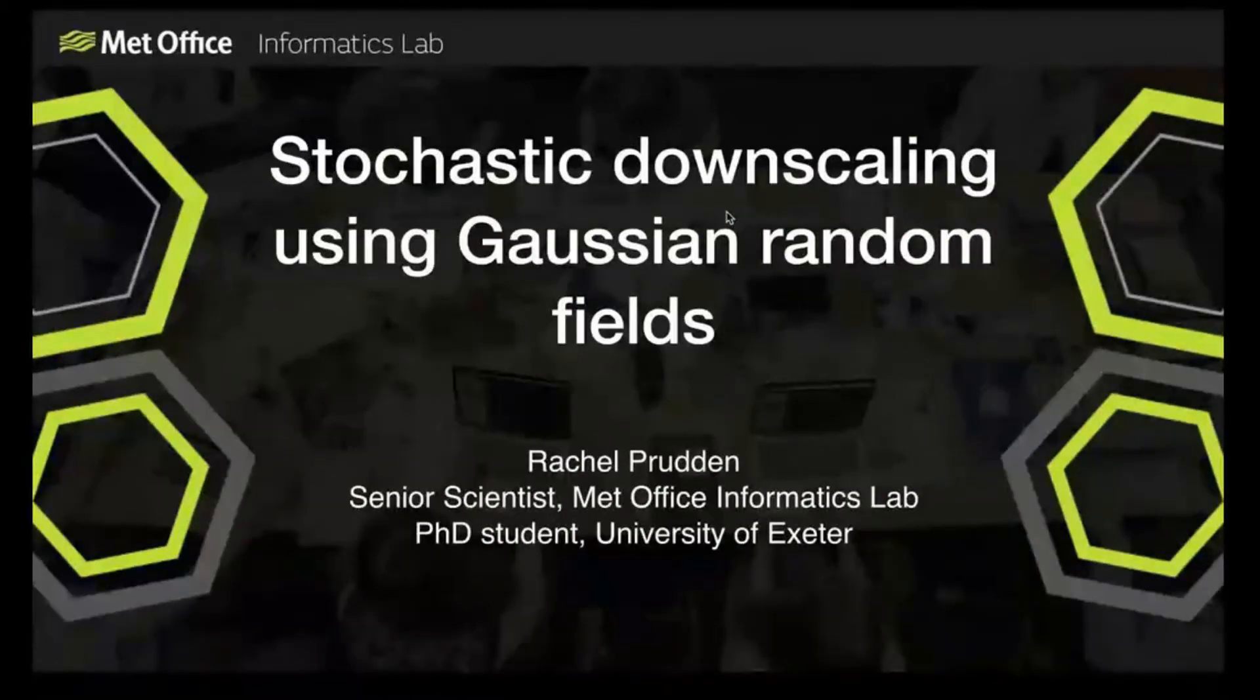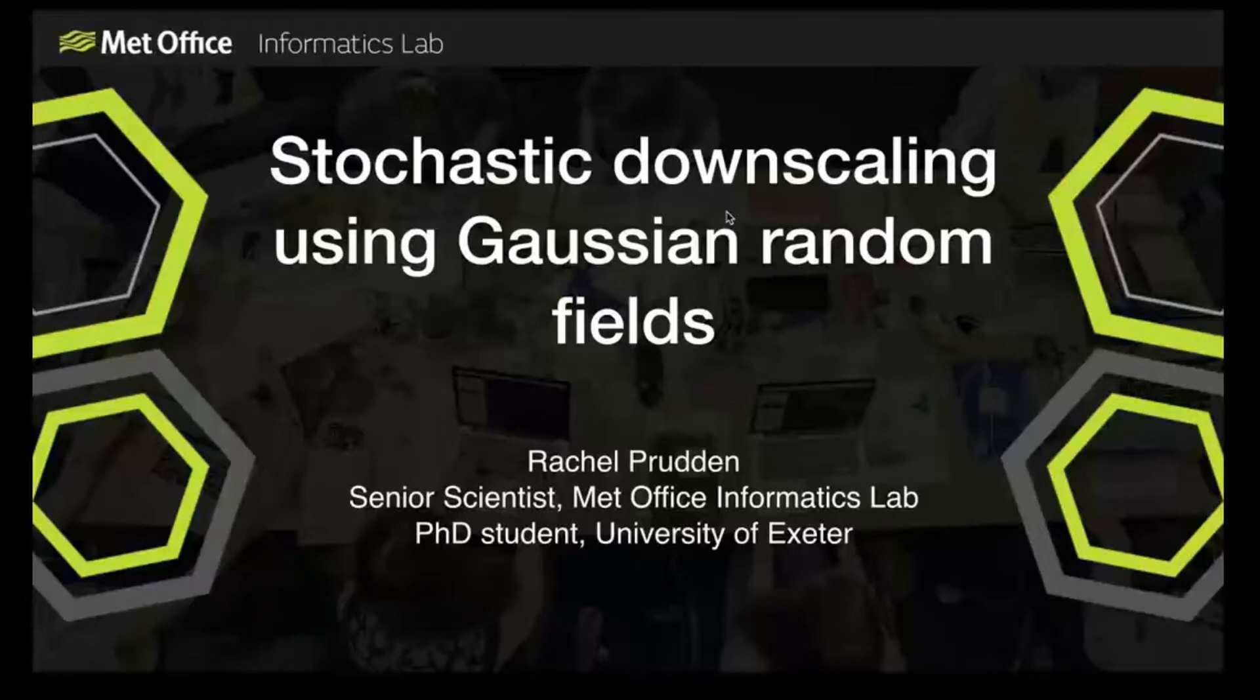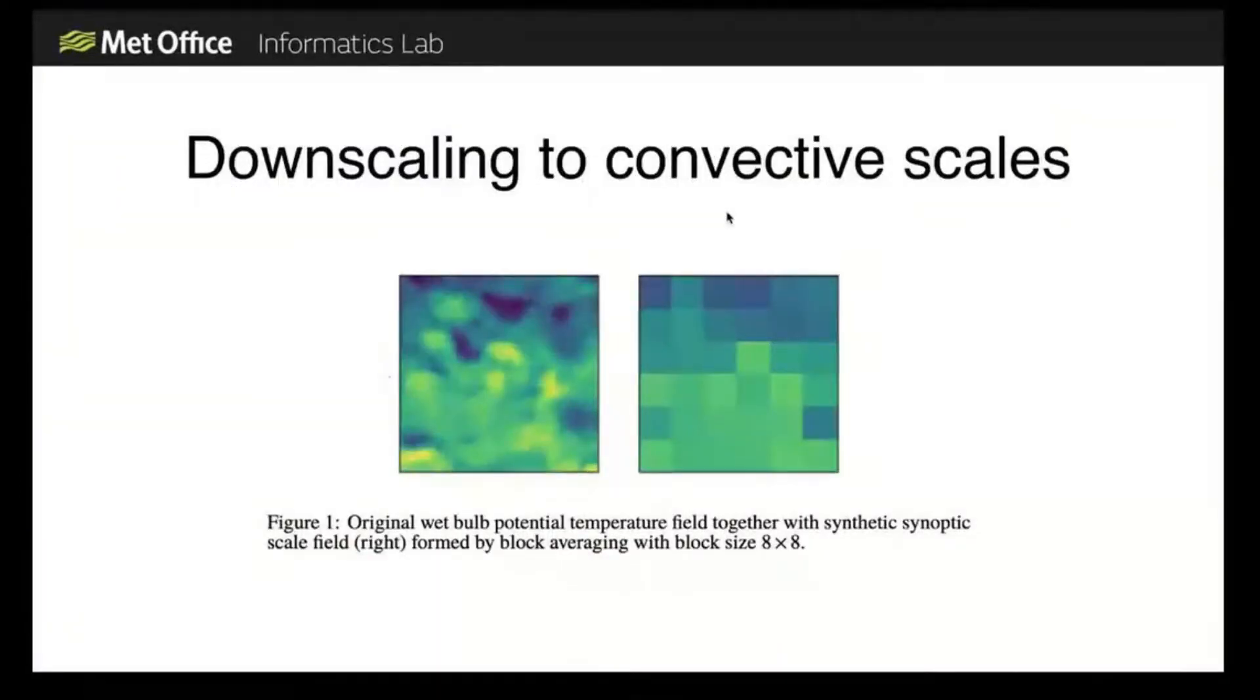I'm going to be talking about downscaling or super resolution, which has come up briefly already and I think a couple of people will be discussing. I'm specifically talking about a synthetic downscaling task for wet bulb potential temperature over the UK, looking at going from roughly synoptic or mesoscale to convective scales of about one to two kilometres.